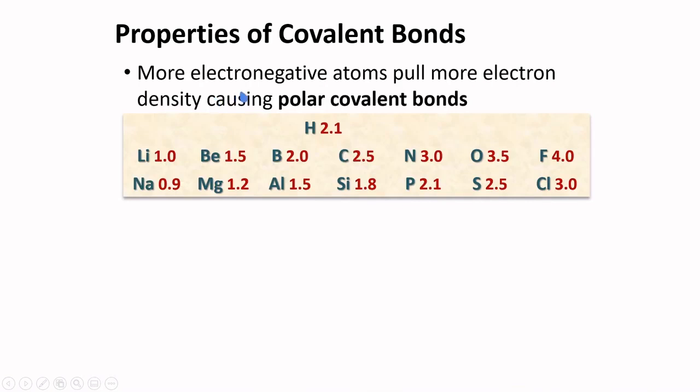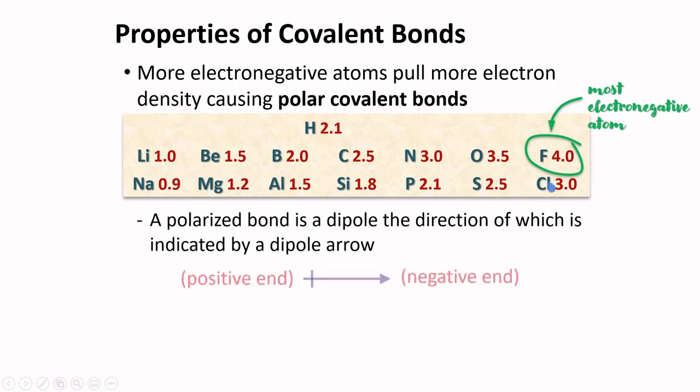More electronegative atoms pull more electron density, causing polar covalent bonds. Here is a list of electronegativity values according to the Pauling scale. As you know, fluorine is the most electronegative atom. If we are to look at the trends, the electronegativity of atoms increase from left to right and from bottom to top.